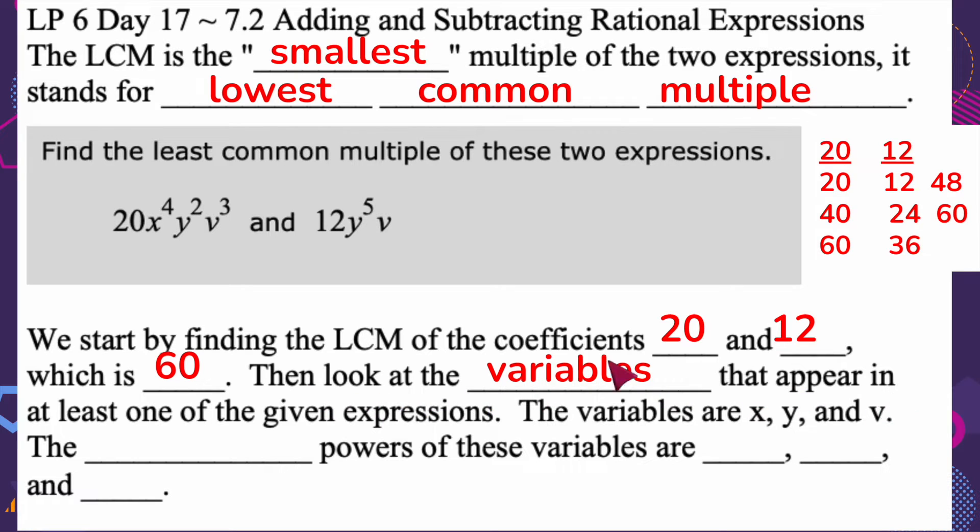So then look at the variables that appear in at least one of the given expressions. So the variables are X, Y, and V, and the highest powers of these variables are X to the 4th, Y to the 5th, and V to the 3rd.